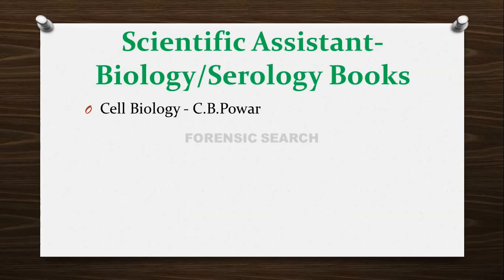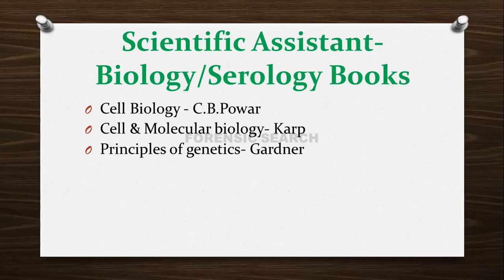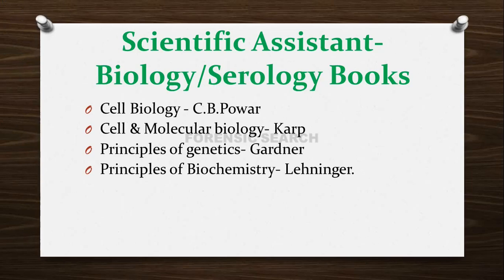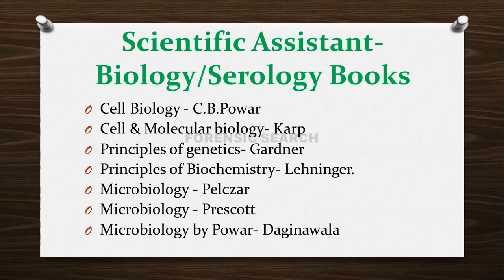For Cell Biology: Cell Biology by De Robertis, and Cell and Molecular Biology by Karp are good books. For Genetics: Principles of Genetics by Gardner. For Biochemistry, the most important book is Principles of Biochemistry by Lehninger. For Microbiology: Microbiology by Pelczar, or Microbiology by Prescott — either one can be referred — and Microbiology by Power (Pelczar edition) is also good.